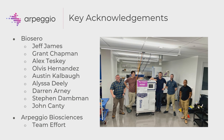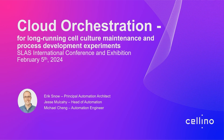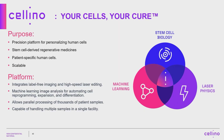My name is Eric Snow. I've been working with Cellino for the past couple of years. Cellino is a cell therapy manufacturing platform company — we're building a platform for manufacturing patient-specific iPSCs using proprietary laser cell editing technology driven by machine learning image analysis. The goal of automating this type of manufacturing is to bring down the costs of trials and research into cell therapies, to process many samples in parallel, and to reduce the time humans spend processing iPSCs in manual culture.